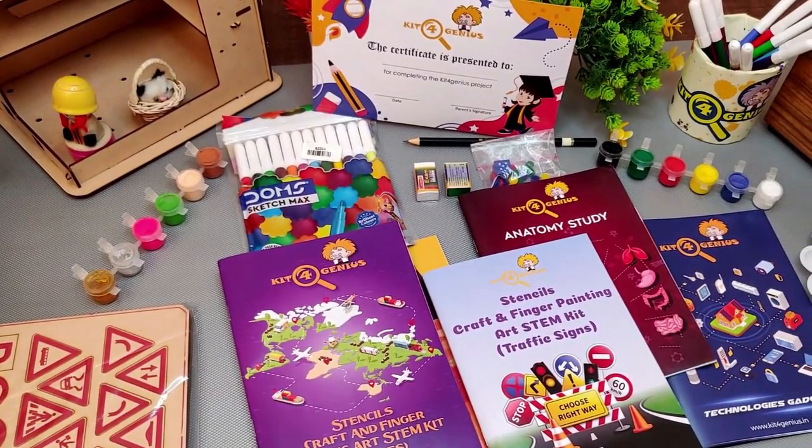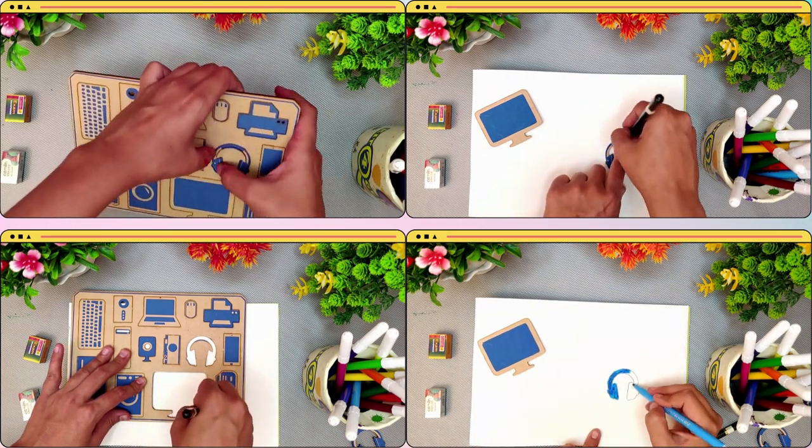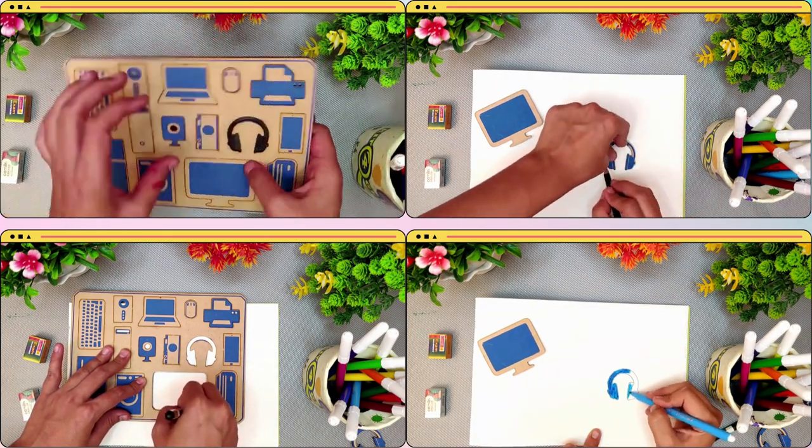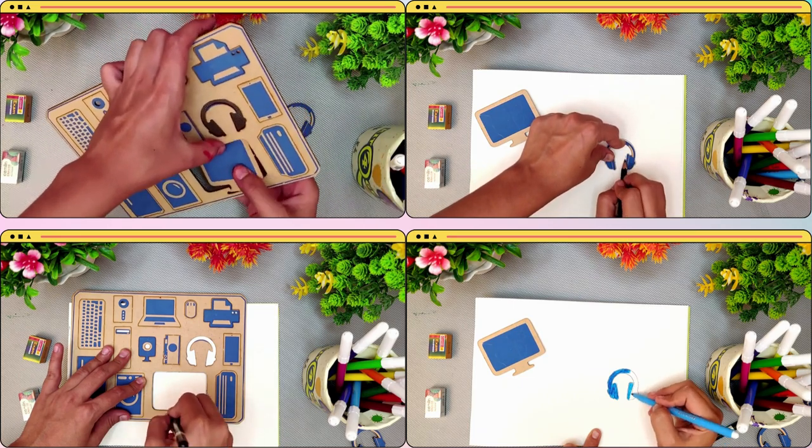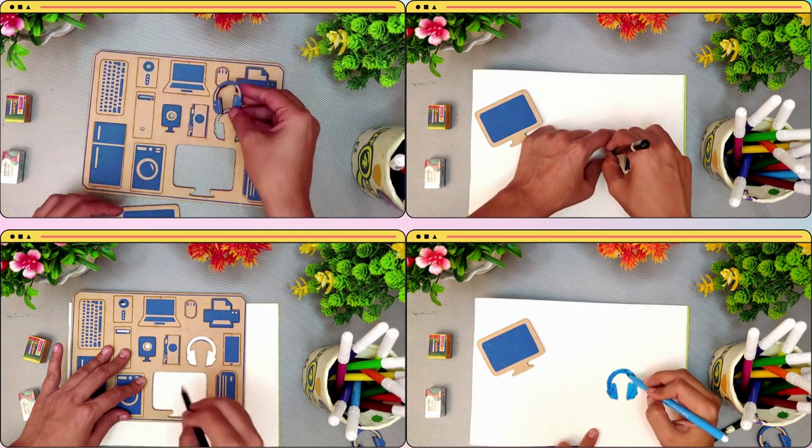or sketch a masterpiece. Our drawing templates include five reusable stencils for sketching and painting which helps children draw basic shapes such as vehicles, traffic signal signs, the human body and technological gadgets.